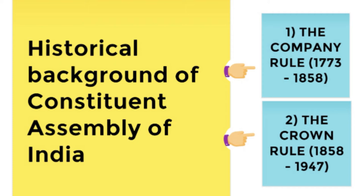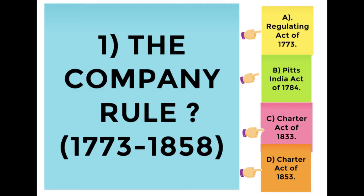Welcome to this new tutorial. In this tutorial we are going to talk about the Crown Rule in India. Before this, we have already spoken about the company rule in India, covering the Regulating Act of 1773, Pitt's India Act of 1784, Charter Act of 1833, and Charter Act of 1853. All those tutorials from 1773 to 1858 are already uploaded with links in the description box below. In this tutorial we will learn the Crown Rule from 1858 to 1947.